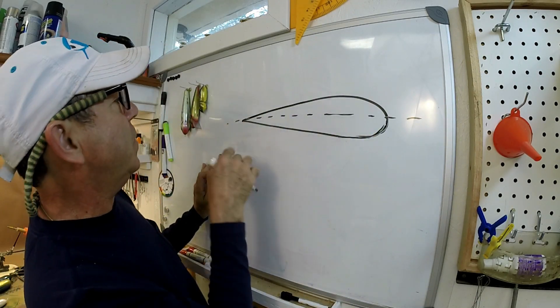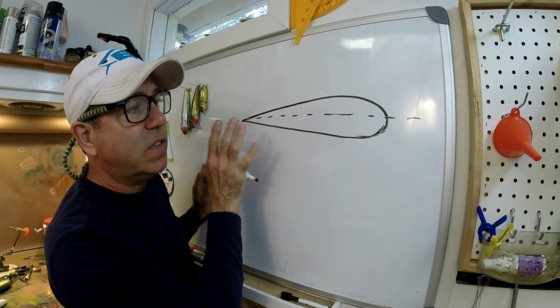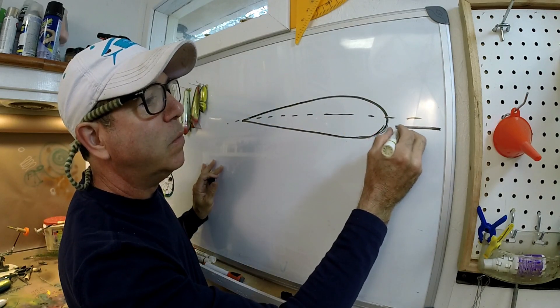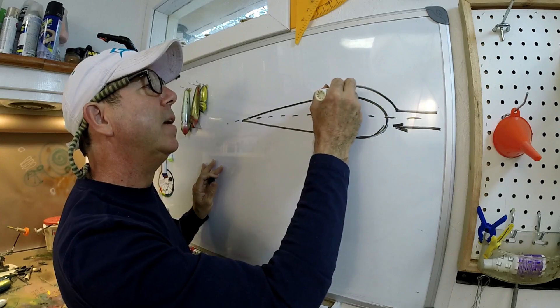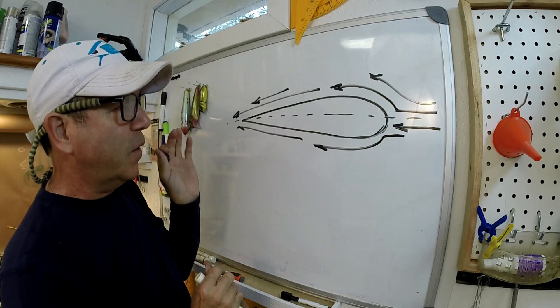A lot of folks make the mistake of thinking that this thing flies in that direction because it flies pointy end first. That's not true. It's most efficient flying in that direction, so fluid flow would be going over the body like so. That's the most efficient way to throw this lure.